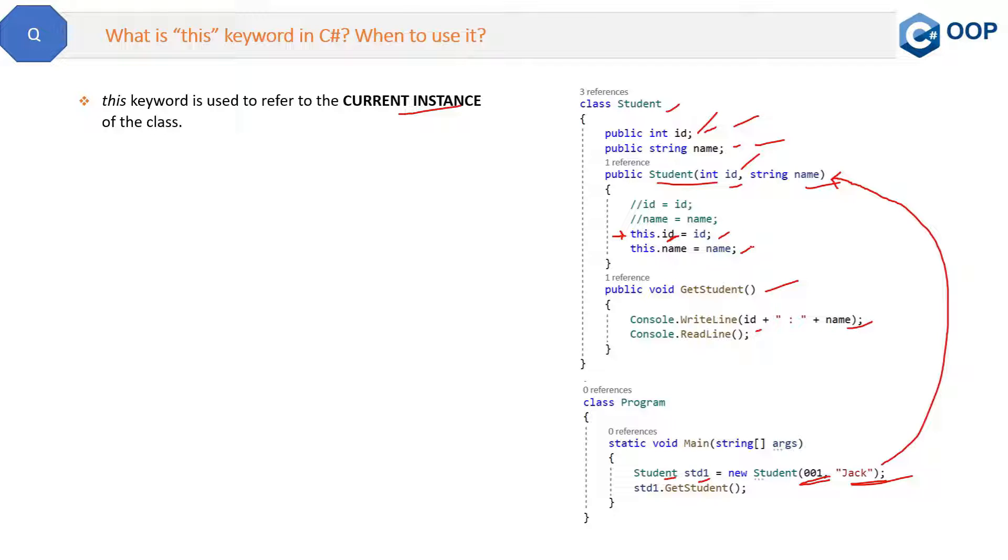Now let me show you the same thing in the code. But before that, we can say the 'this' keyword avoids the naming confusion between class fields and constructor parameters. This can be one use of the 'this' keyword. Let me show you the same thing in the code.